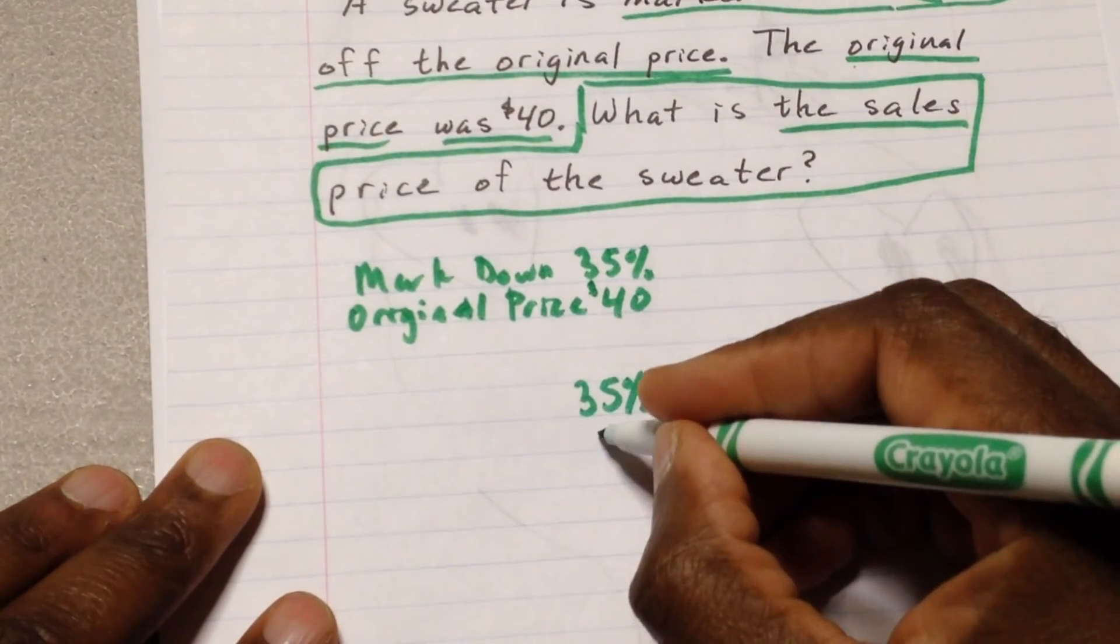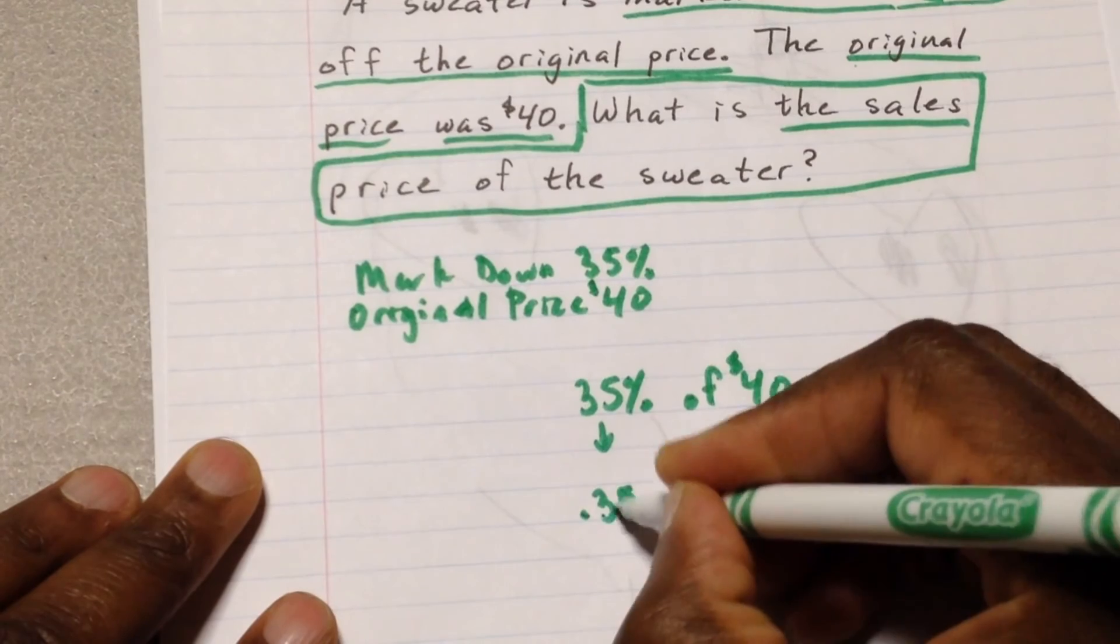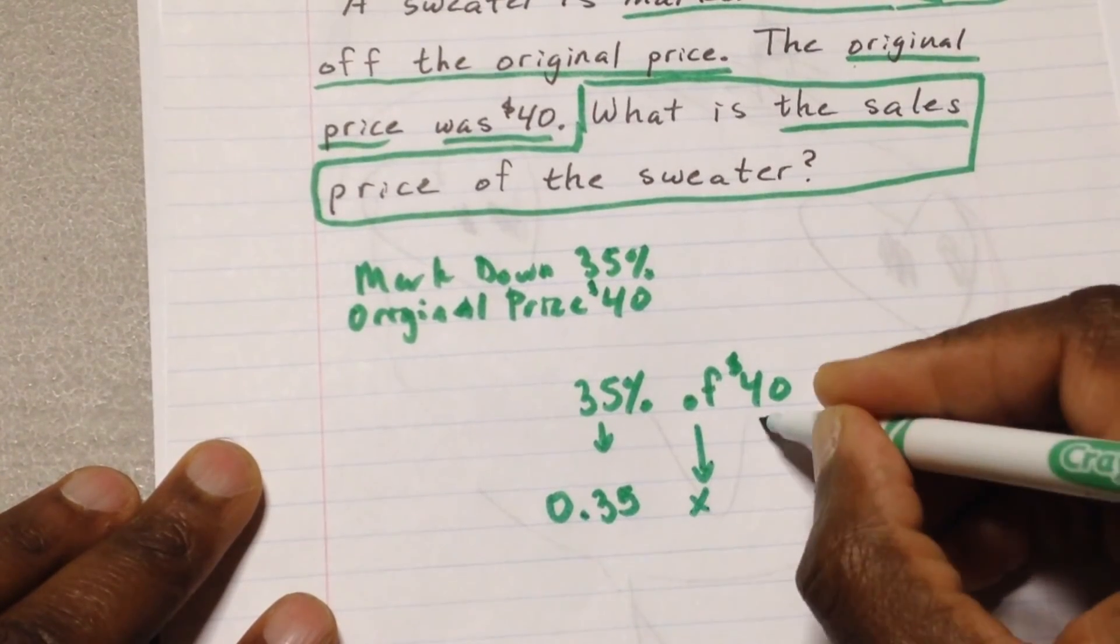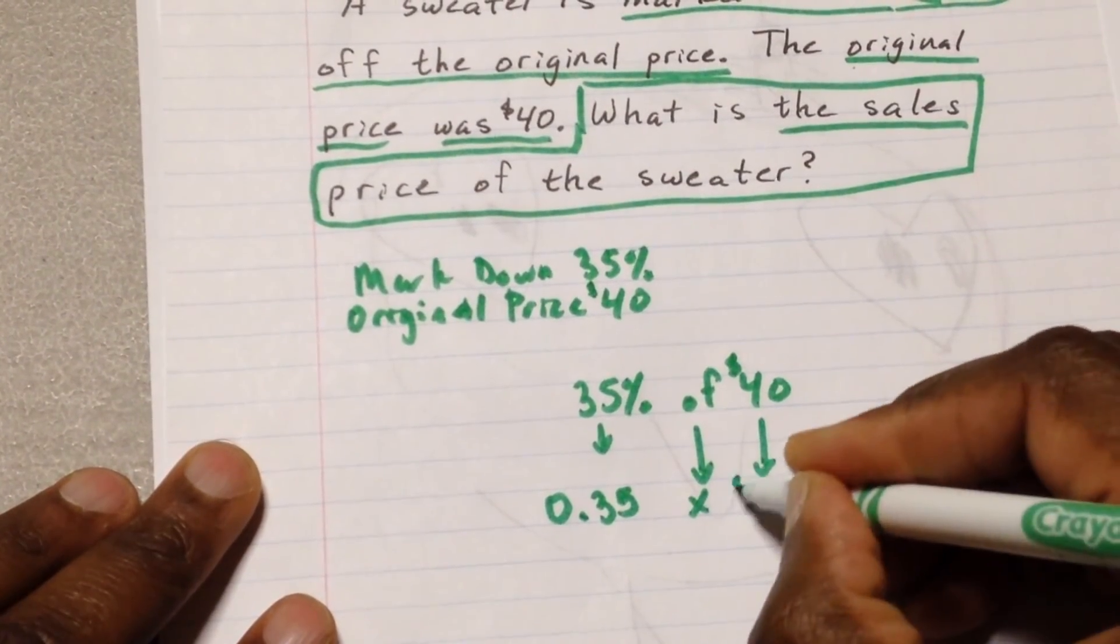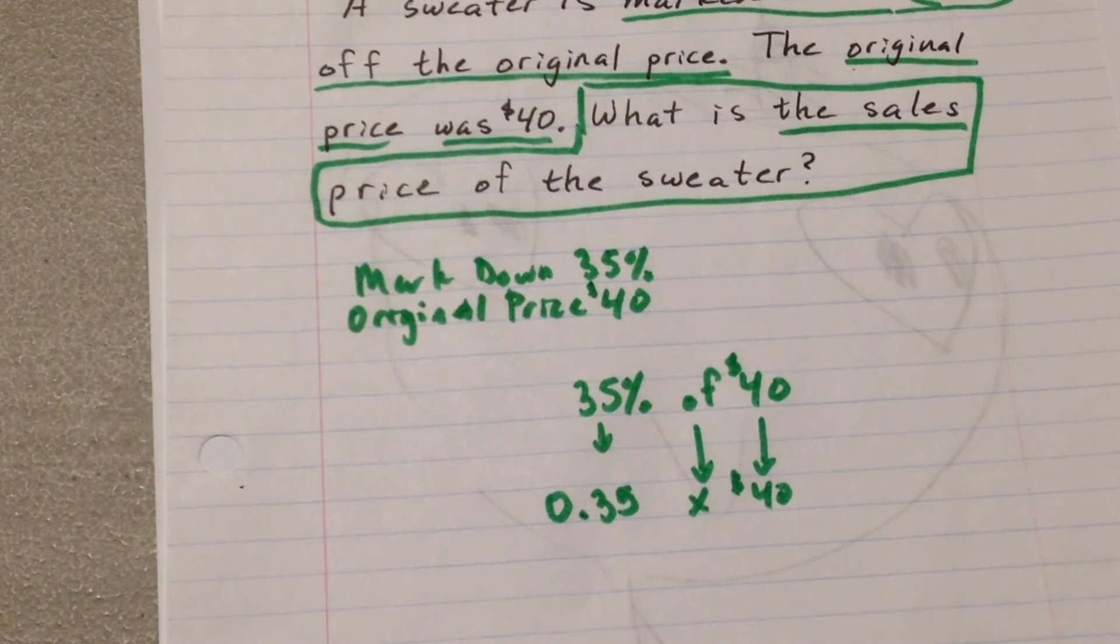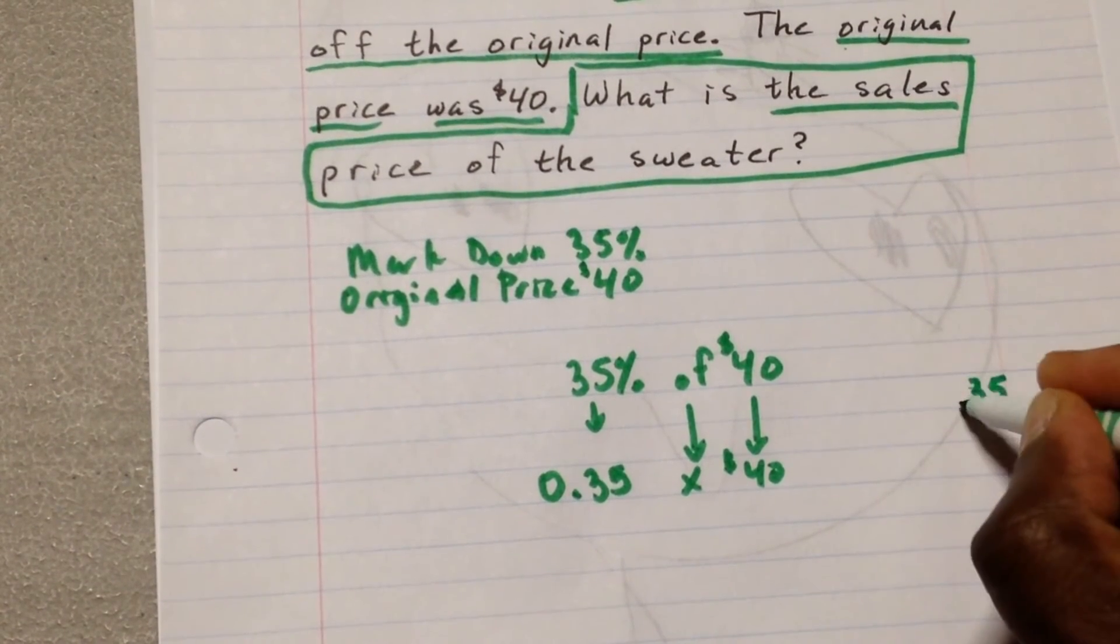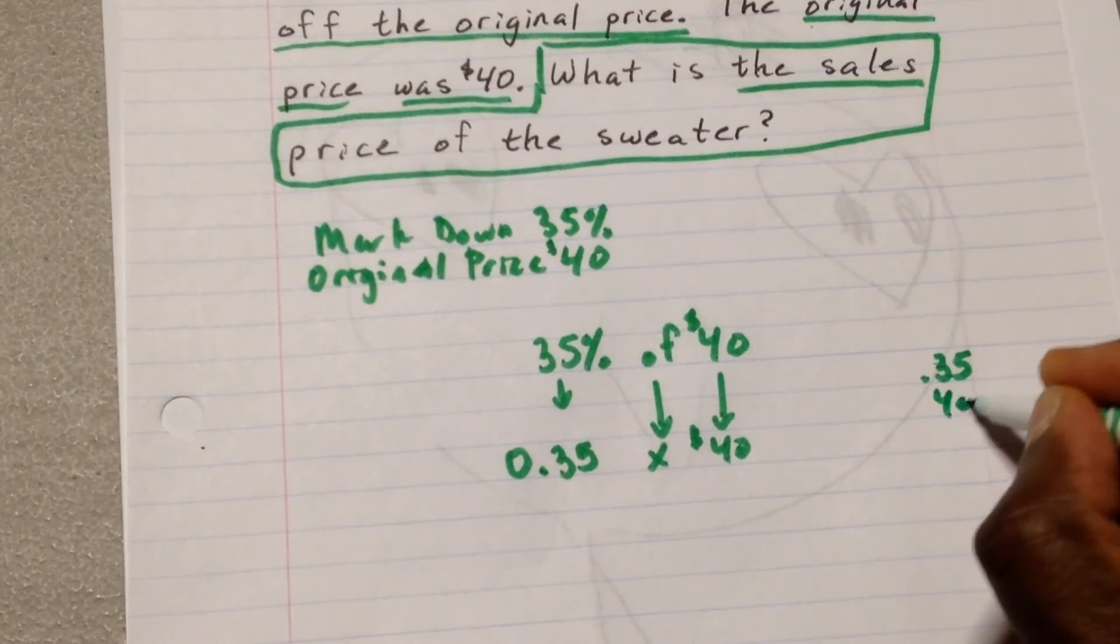So remember, we turned this into a decimal, which will become now 0.35 multiplied of $40. Okay. And when we do the math for this, let's see. Let's do it real fast. It's going to be 35. That was 40.